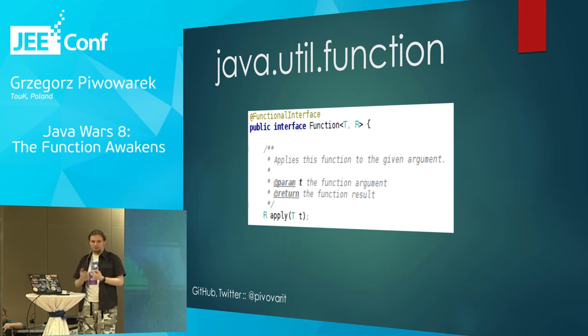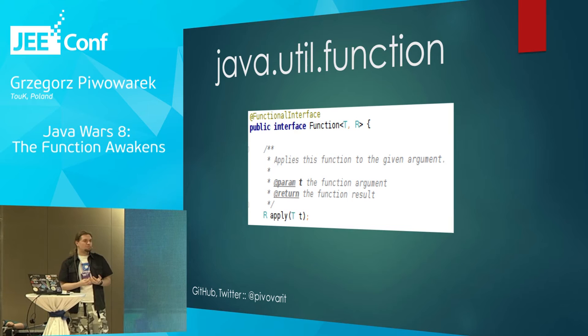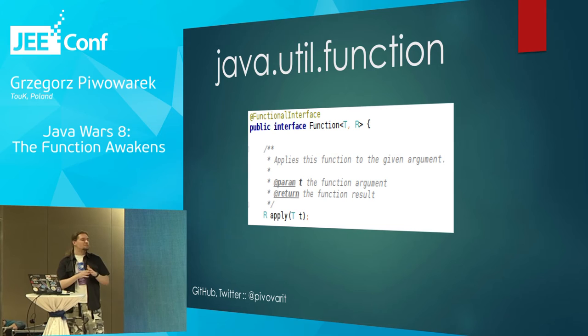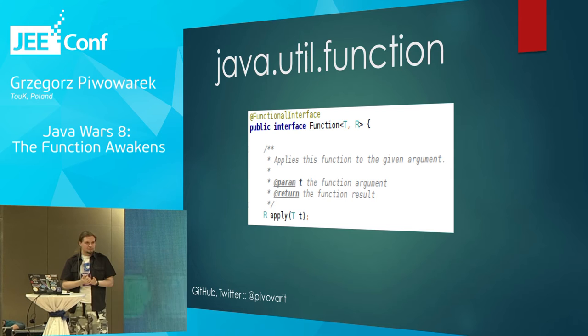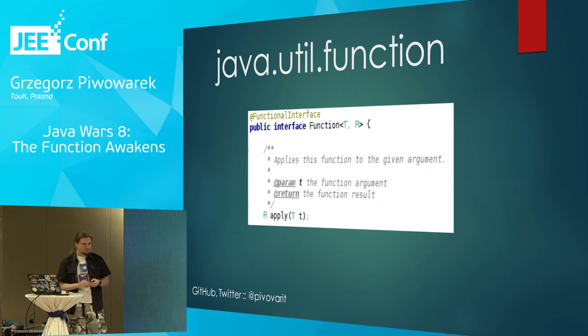Now let's look inside the java.util.function package. In previous versions of Java, if we really wanted to pass some action somewhere, we would need to create an anonymous implementation of some interface. Java creators, in order to sustain backwards compatibility, carried over this idea. So basically all our lambdas that we use in our code need to be translated into some interfaces. When we represent an action, we are creating an implementation — by lambda — of some functional interface. Functional interfaces are those interfaces that have one abstract method.